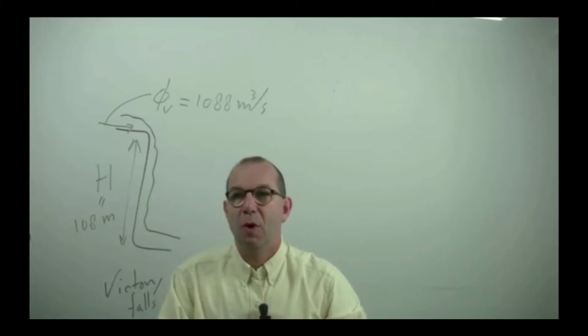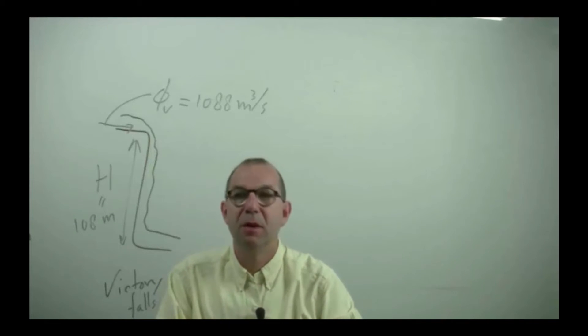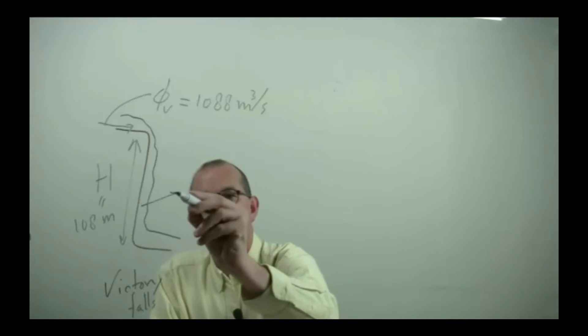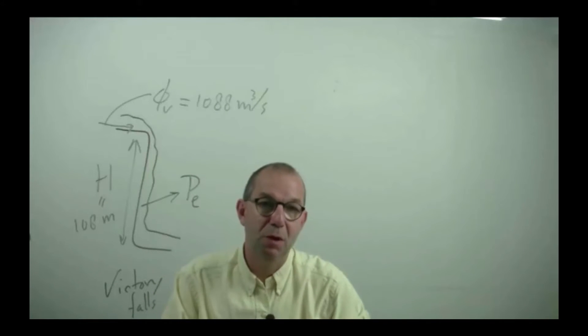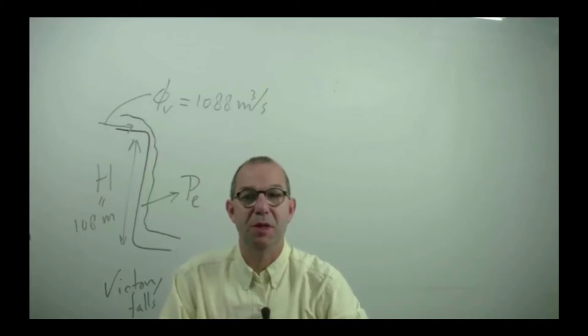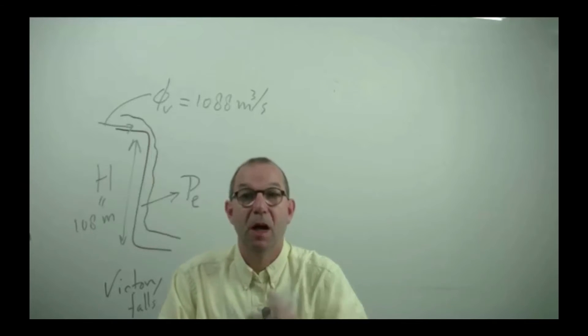Suppose we would be able to turn all this gravitational energy into electricity. So we would turn the Victoria Falls into an electric power plant. How much would that be? To give you a ballpark number, standard modern power plants fired by fossil fuels have energies around 2000 megawatts. How much would this be?